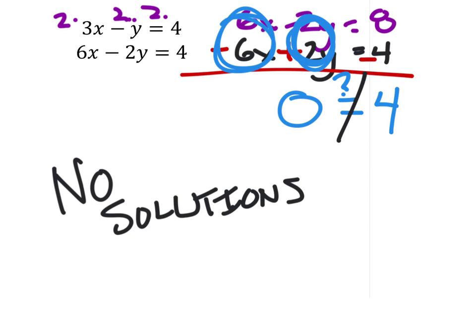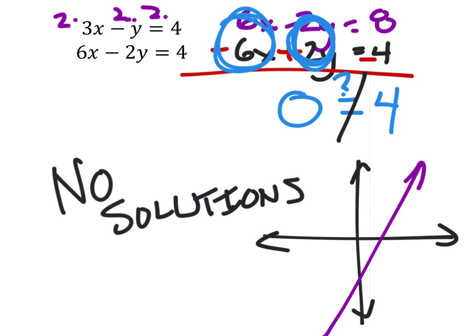On this one, if we were to graph both of these, it just means that they would be parallel lines. So that first equation looks like it would have been something like this purple line.